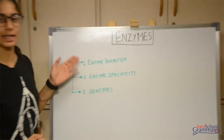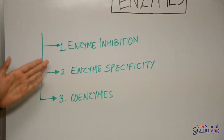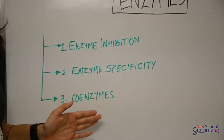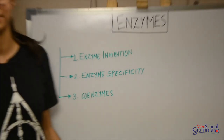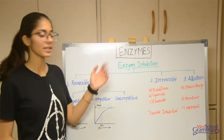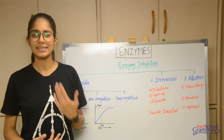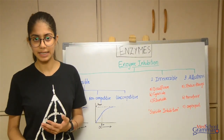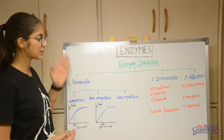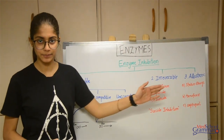In today's video, we're going to cover enzyme inhibition, enzyme specificity, and the topic of coenzymes. Let's start with enzyme inhibition. Enzyme inhibitions are basically of three types: reversible, irreversible, and allosteric. Let's look into what each of these are.